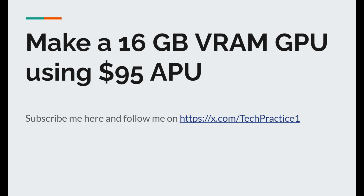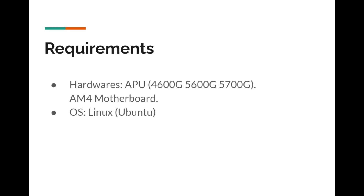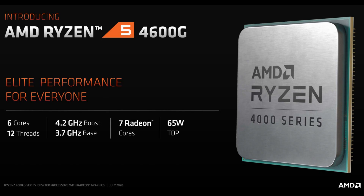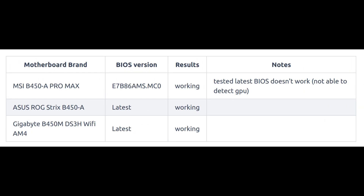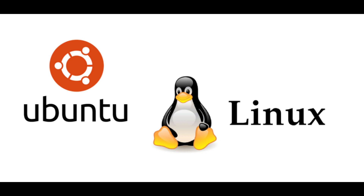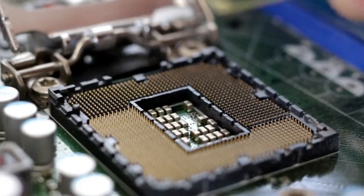Today I'm diving deep into the details to show you exactly how to set it up, so buckle up because we are about to get technical. First, let's talk about hardware requirements. You'll need an APU — I recommend the 4600G, 5600G, or 5700G, but others might also work. You need to pair that with an AM4 motherboard. I've tested a few systems and I'm listing them here, but remember your results might vary. For the operating system, you are going to need Linux — I'm using Ubuntu in this guide, and both 20.04 and 22.04 work.